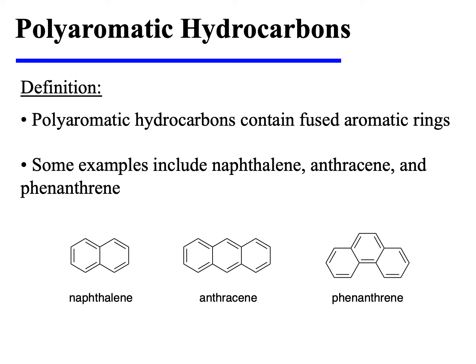Polyaromatic hydrocarbons contain fused aromatic rings. Some examples shown here include naphthalene, anthracene, and phenanthrene.